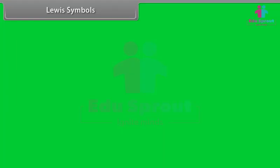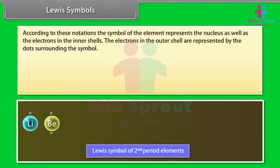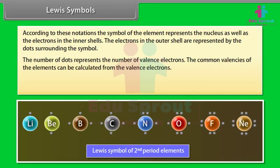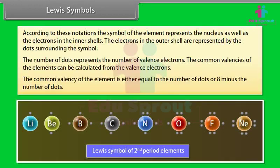According to Lewis symbol notations, the symbol of the element represents the nucleus as well as the electrons in the inner shells. The electrons in the outer shell are represented by dots surrounding the symbol. The number of dots represents the number of valency electrons. The common valency of the element can be calculated from the valency electrons.